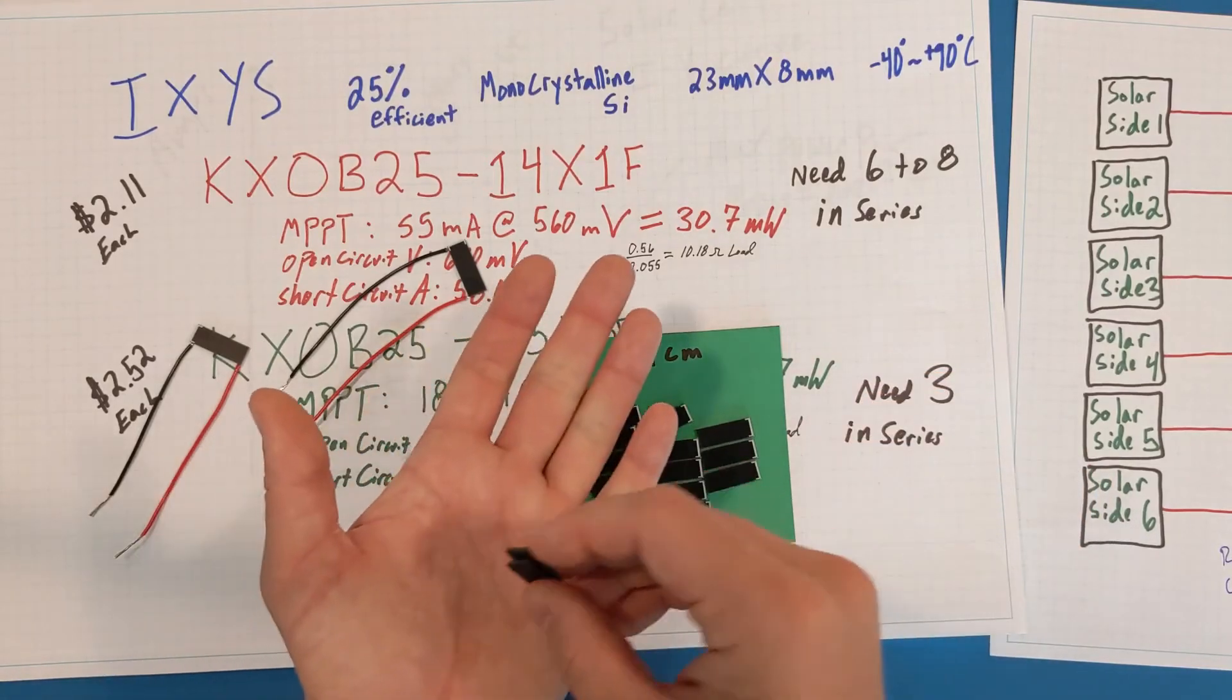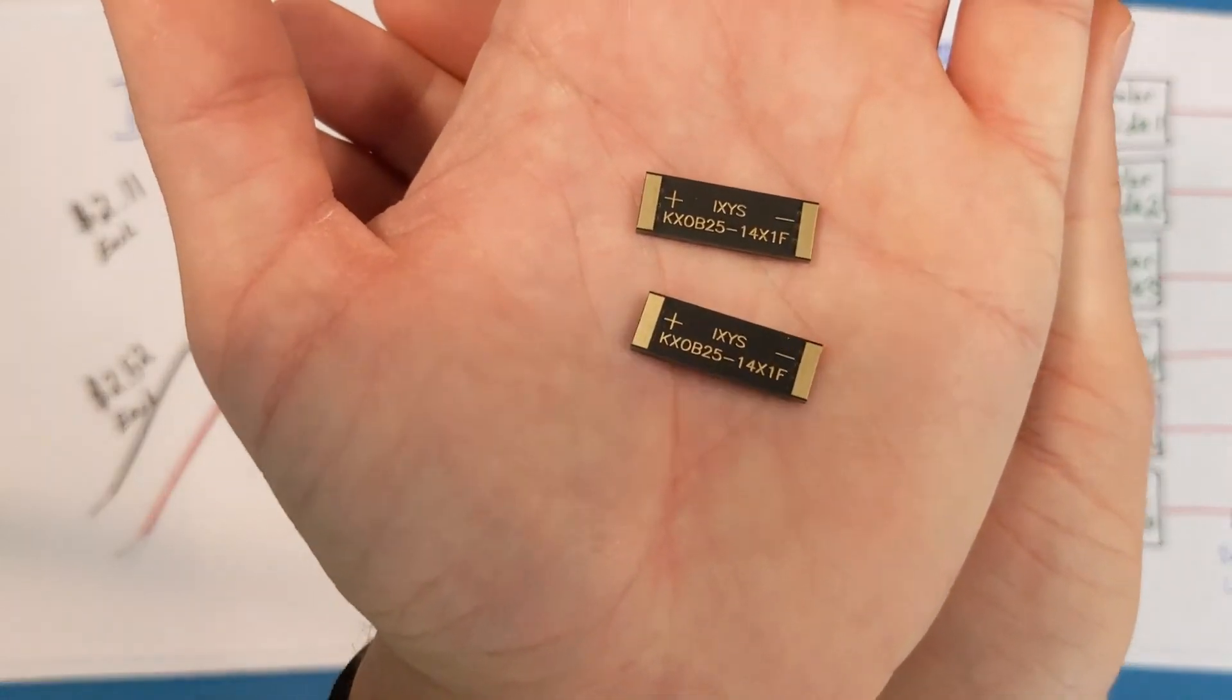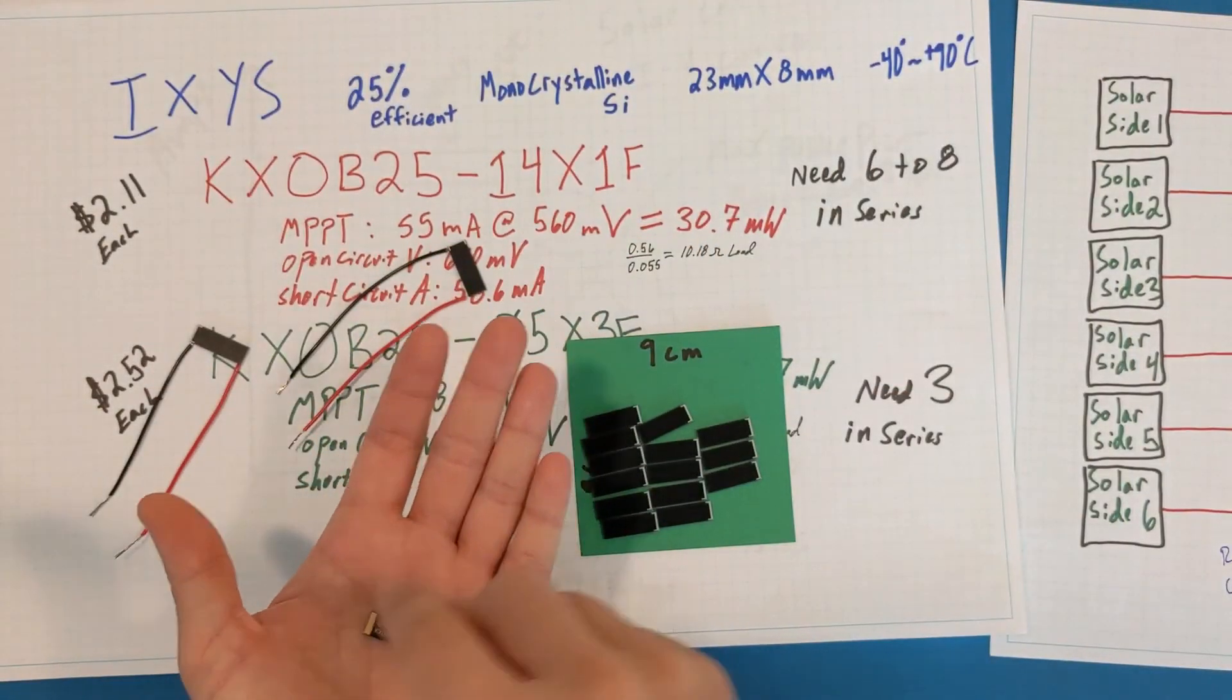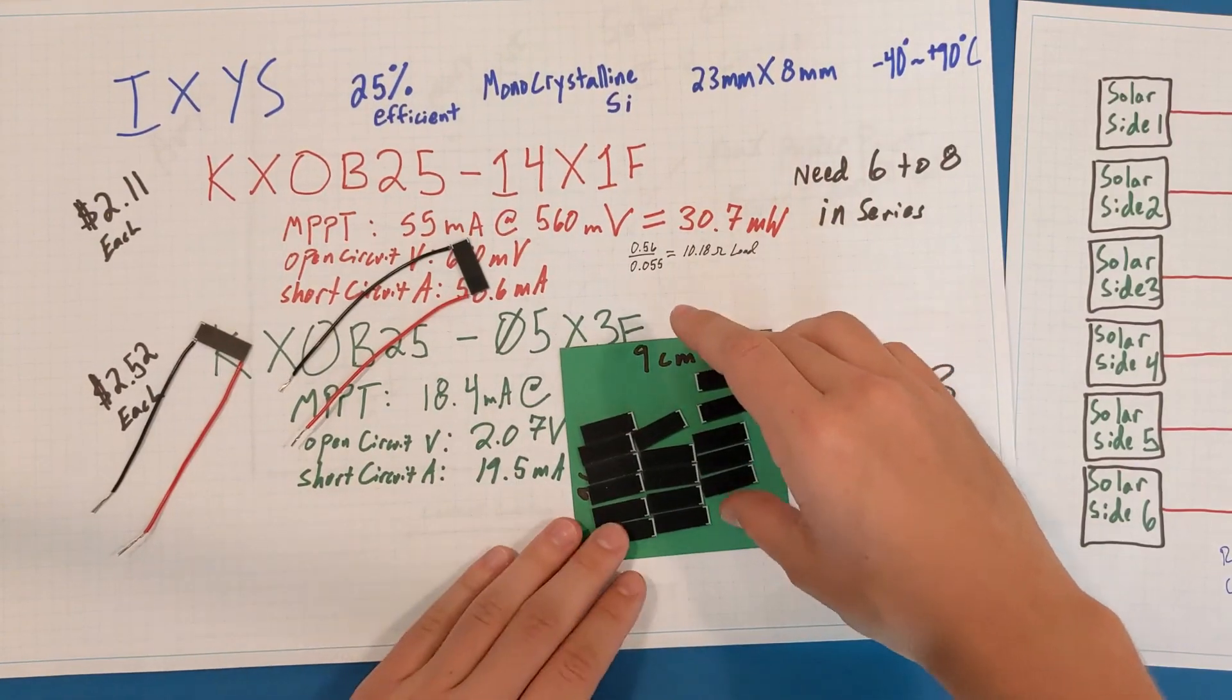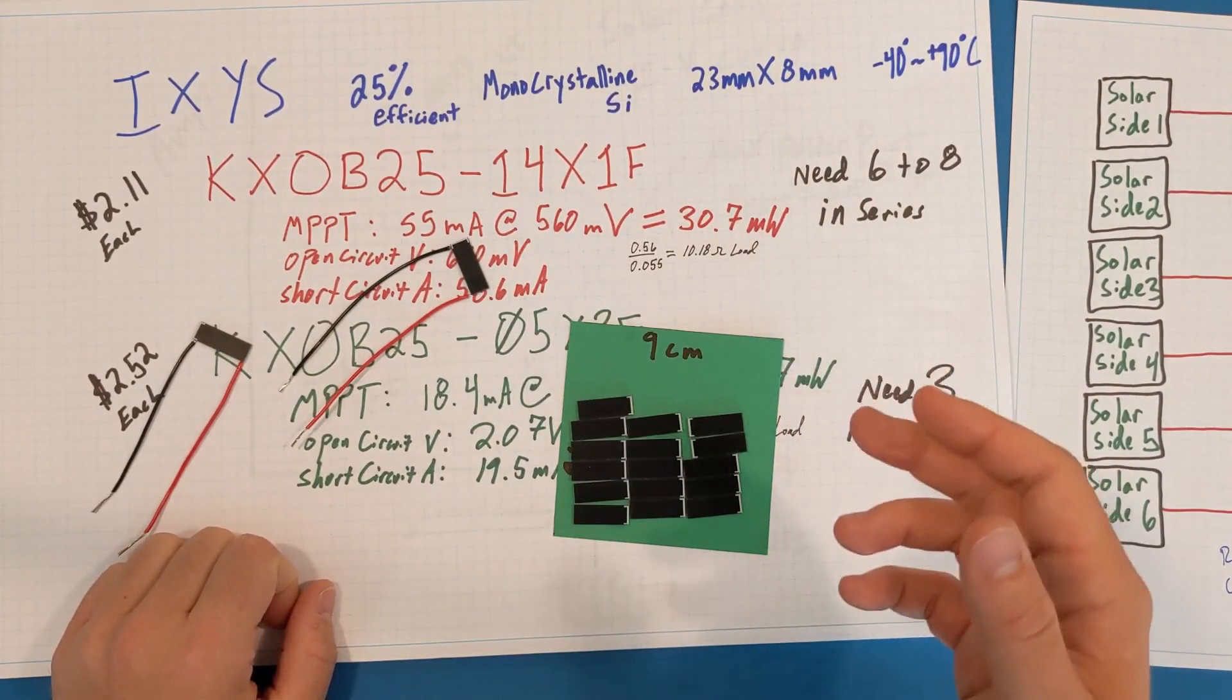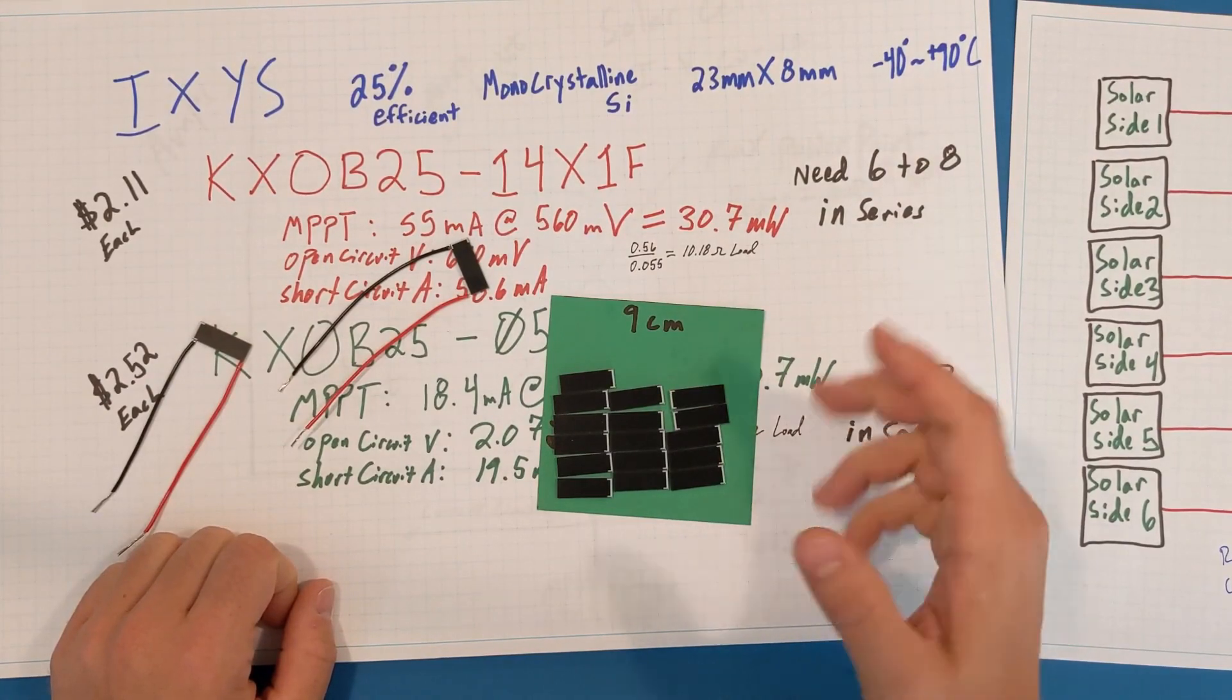Anyway, that's all I have for now. I think I'm going to continue testing with these solar cells and see how they perform. Hopefully they live up to their 30 milliwatt expectations, but I think they're going to make a good, cheap, basic solar cell for my CubeSat. Thanks for watching!